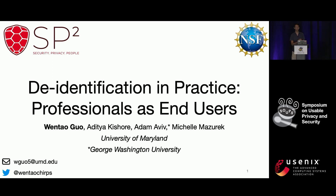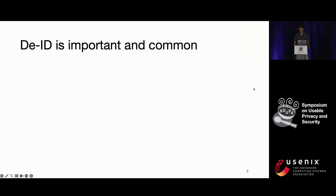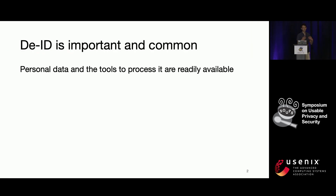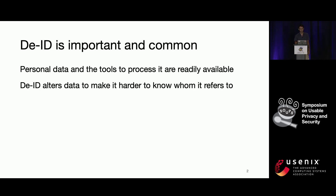Hi everyone. I'm Wen Tao, and I'm going to be talking about some of our research that we're starting on de-identification in practice, where we're looking at professionals as end users. To give some background, personal data — there's a lot of it, and the tools that enable us to analyze it and do things with it are readily available. So de-identification is really important. It alters data such that it's harder to know whom that data refers to, ideally preserving some expectation of privacy.